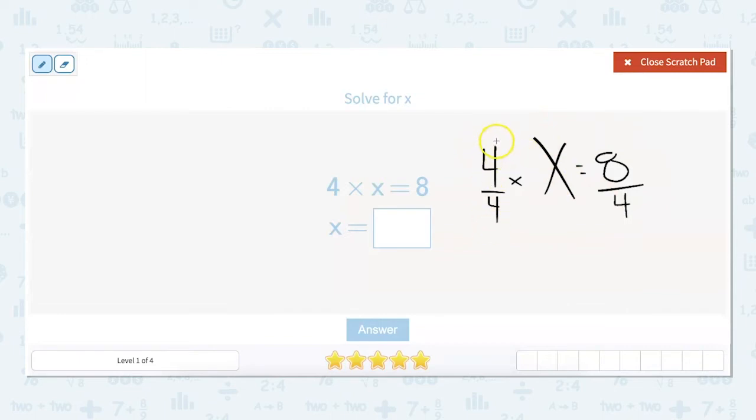So 4 divided by 4 cancels this guy out. It leaves just 1x, but you don't have to put the 1 in front of the x. x equals 8 divided by 4 equals 2. So x equals 2.